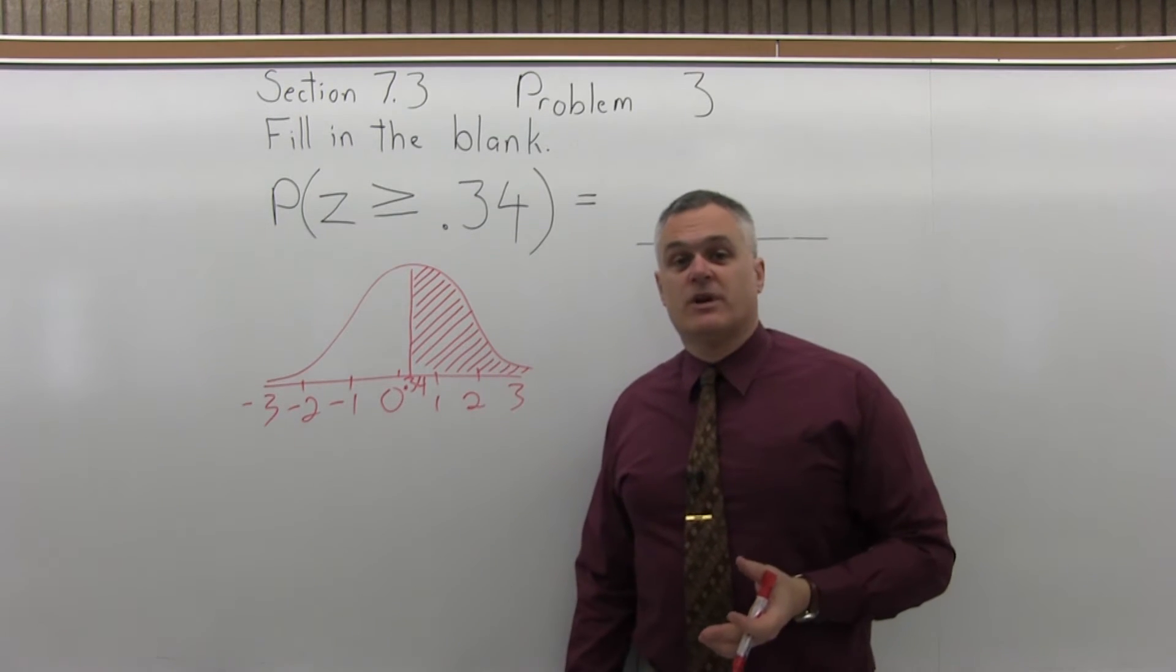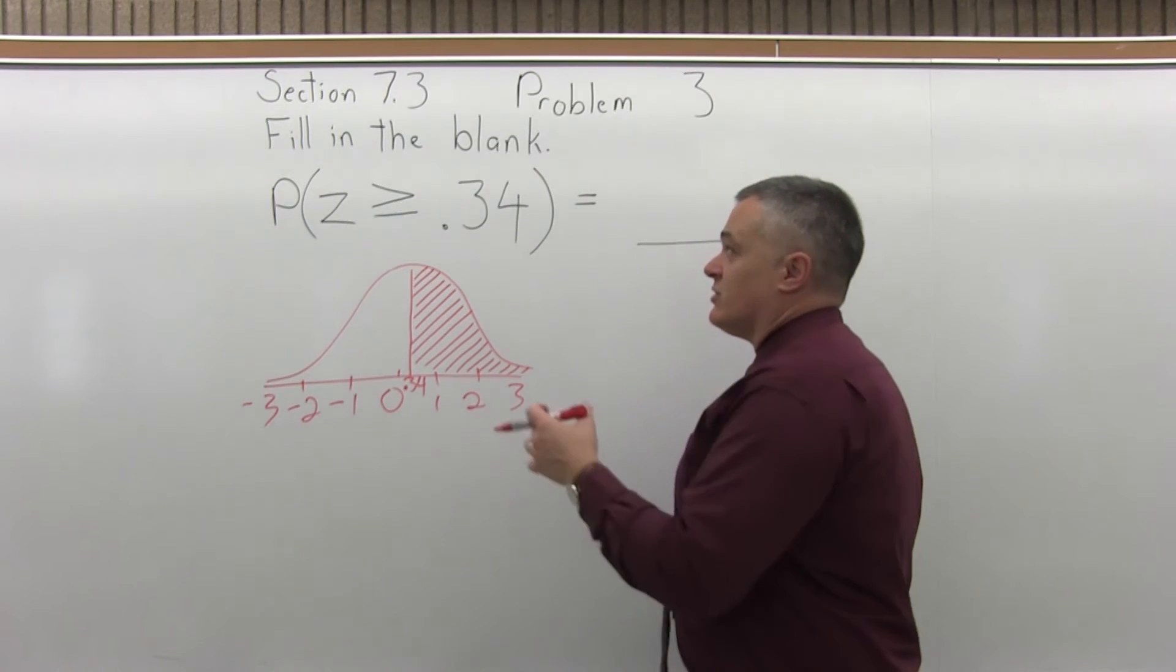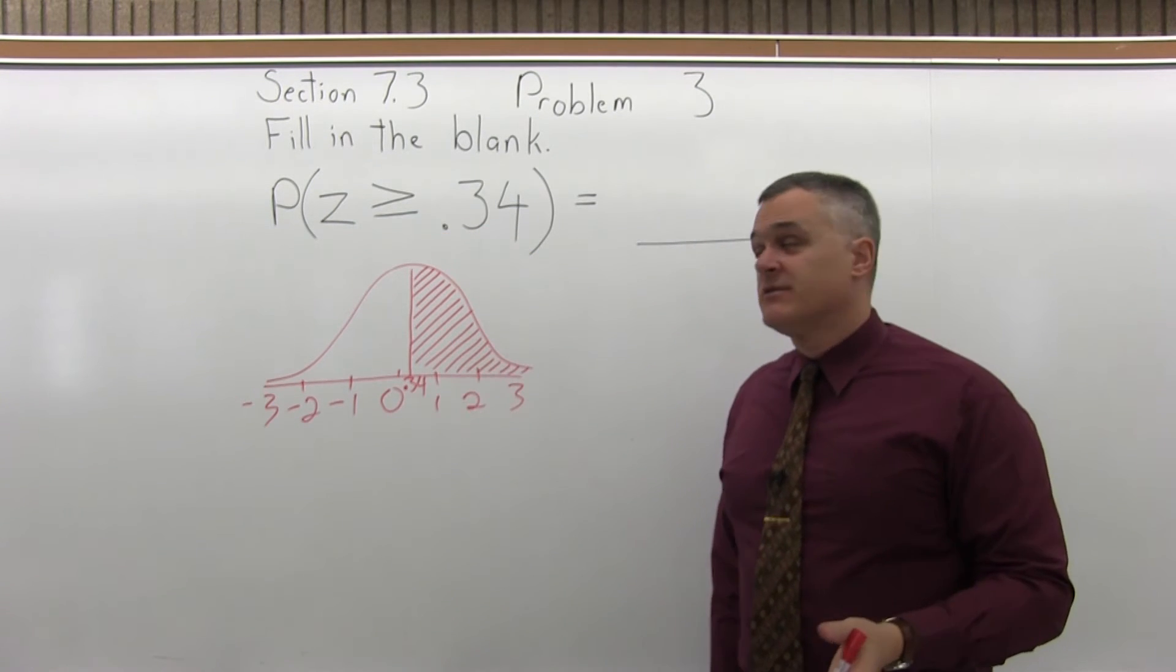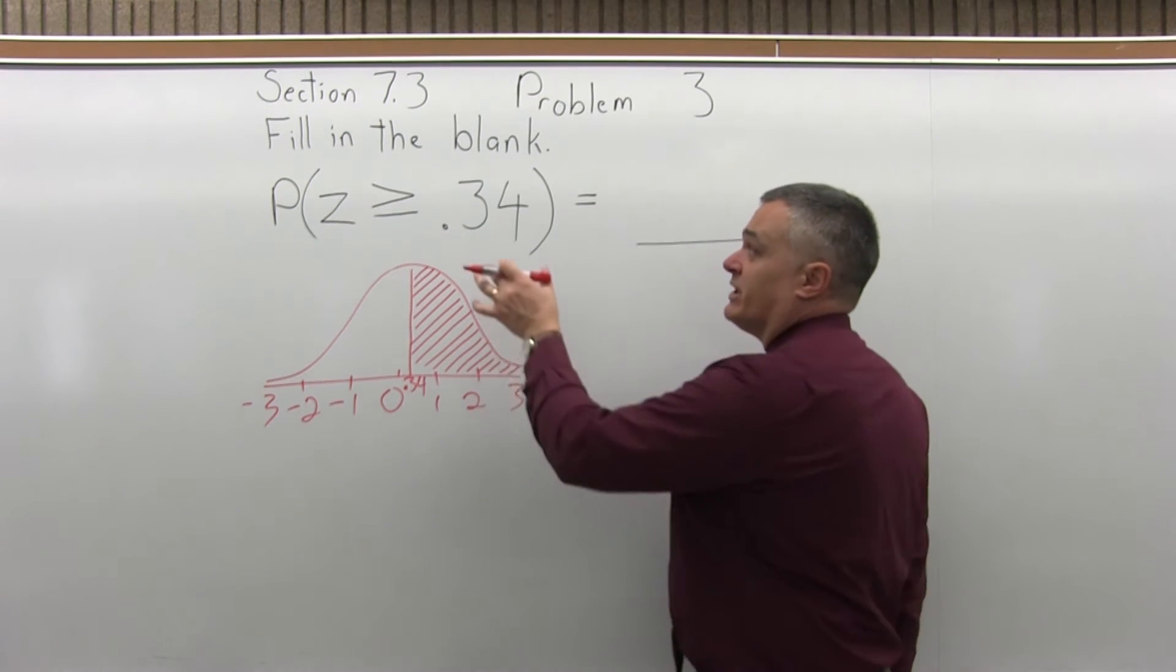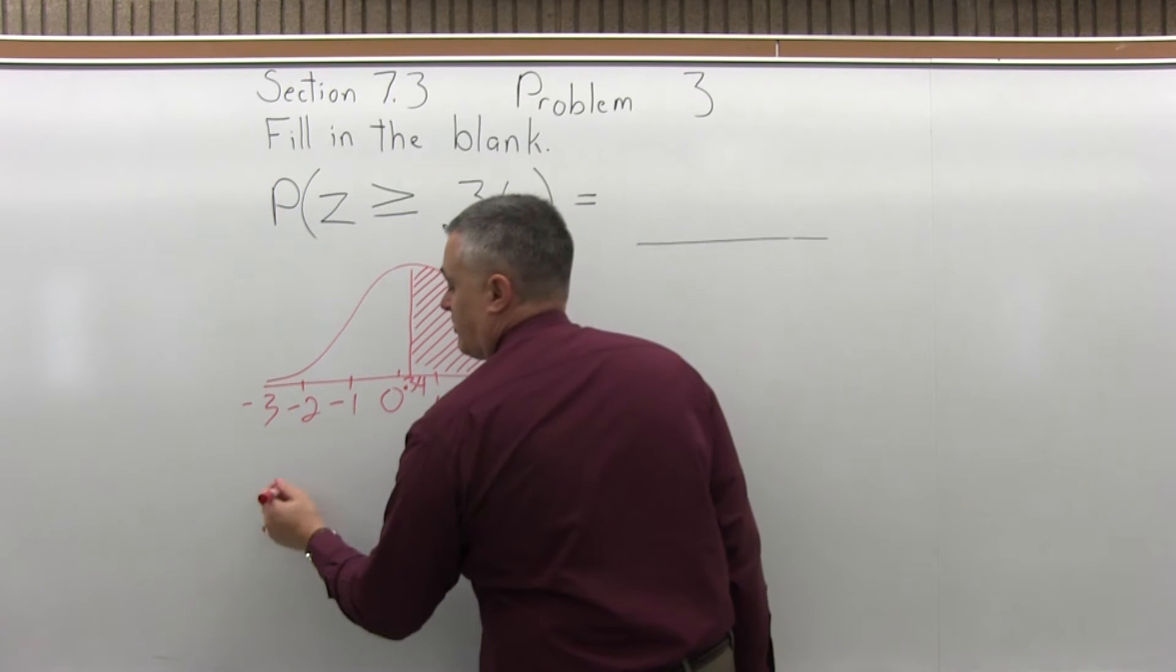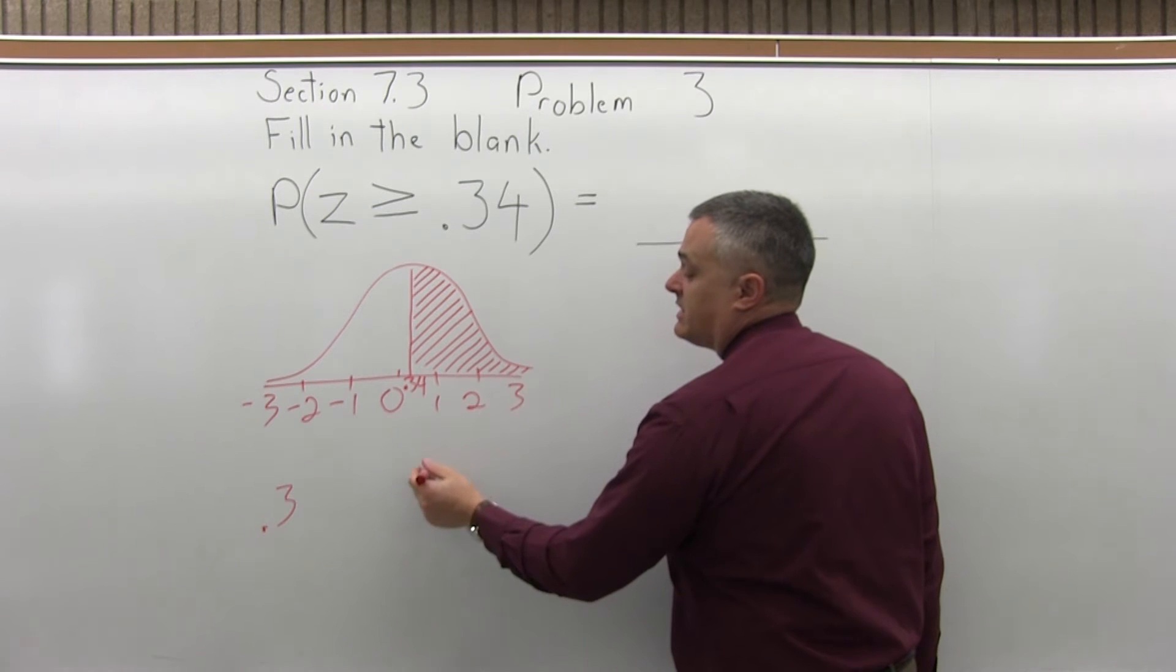We have to look up .34 in our standard normal chart. So to do that, you want to first have two places after the decimal, which we have. The next step is to split the number into two parts by pulling off the rightmost digit. So .34 will be written as .3 and just 4.